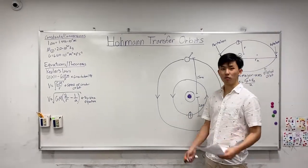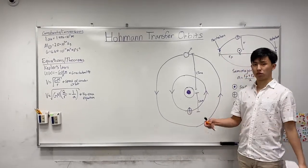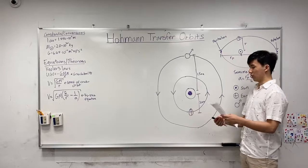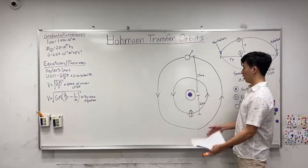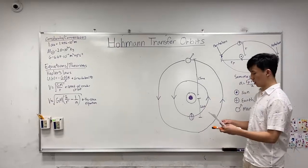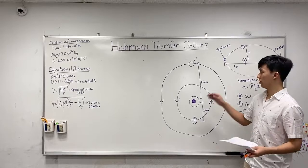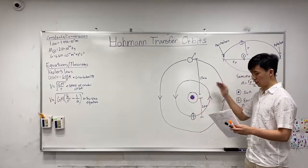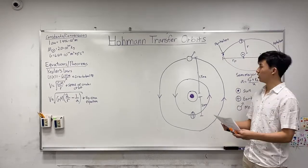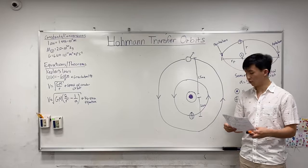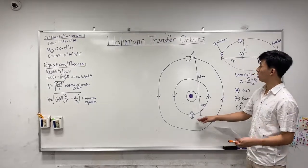Today we're going to be talking about Hohmann transfer orbits, which is a way of changing between different circular orbits around one central body. This is applicable to a variety of different systems, like satellites going around the Earth. For example, the space station, if it ever needs to change the distance away from the Earth that it's orbiting, it uses a Hohmann transfer orbit. In today's example, we're going to determine the speed we need to go from the Earth to Mars.